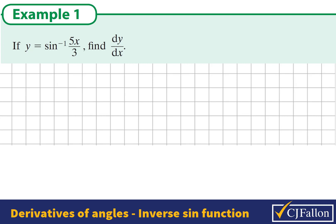The formula for doing this is here in yellow: the derivative of sin⁻¹(x/a) is 1 over the square root of a² minus x².